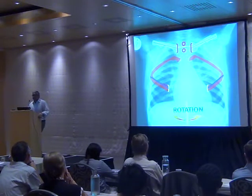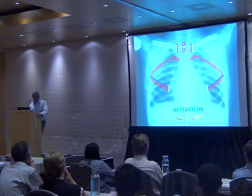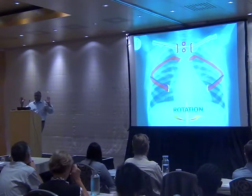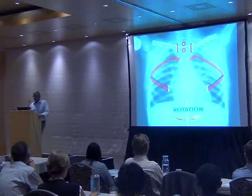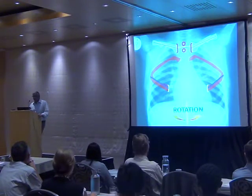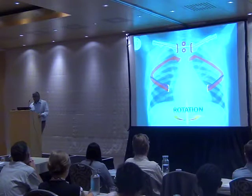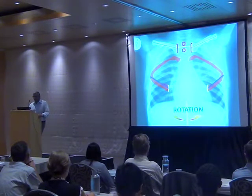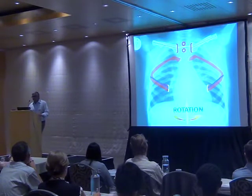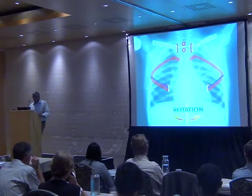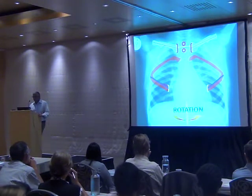Rotation probably represents the greatest challenge in a child who is often throwing themselves back and turning side to side. In adults, we evaluate rotation in terms of the position of the spinous process relative to the clavicles. We can use this in older children, but in younger children we prefer to use the length of the anterior ribs. This applies to rotation in a vertical axis — what we like to see is that the anterior rib ends should be at least equidistant. Rotation to either side may simulate pathology within the hilum of the lungs in particular, and alter the configuration of the heart.